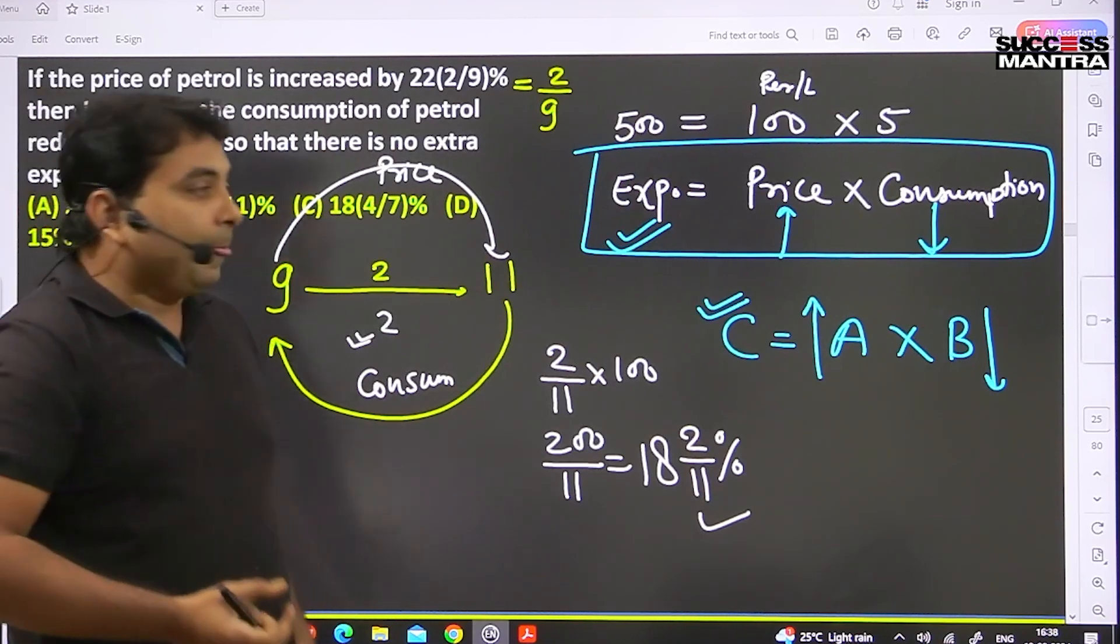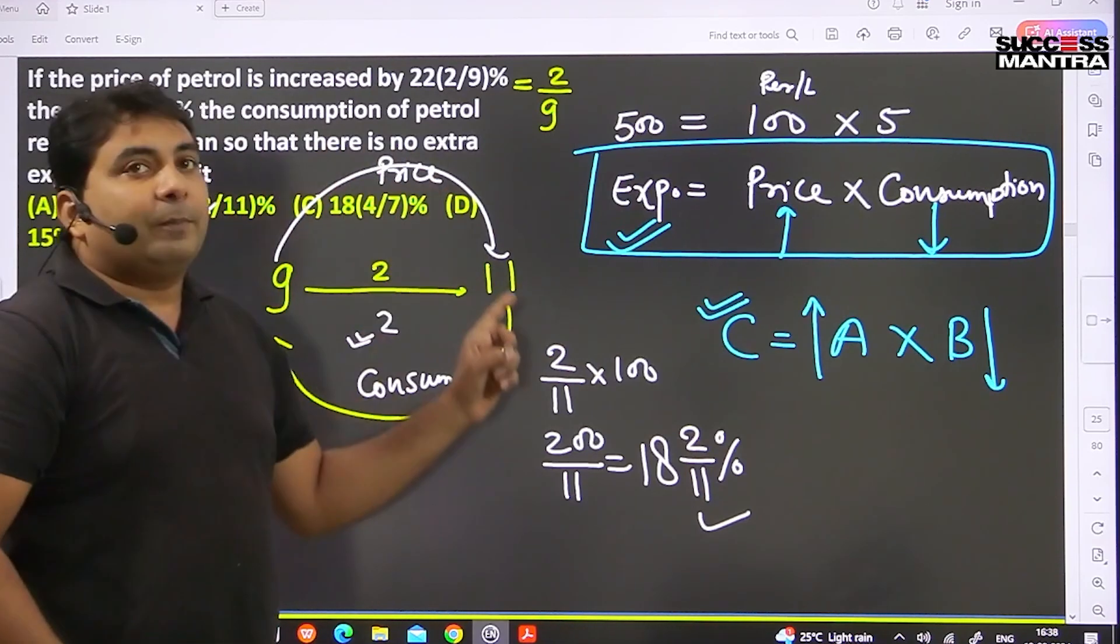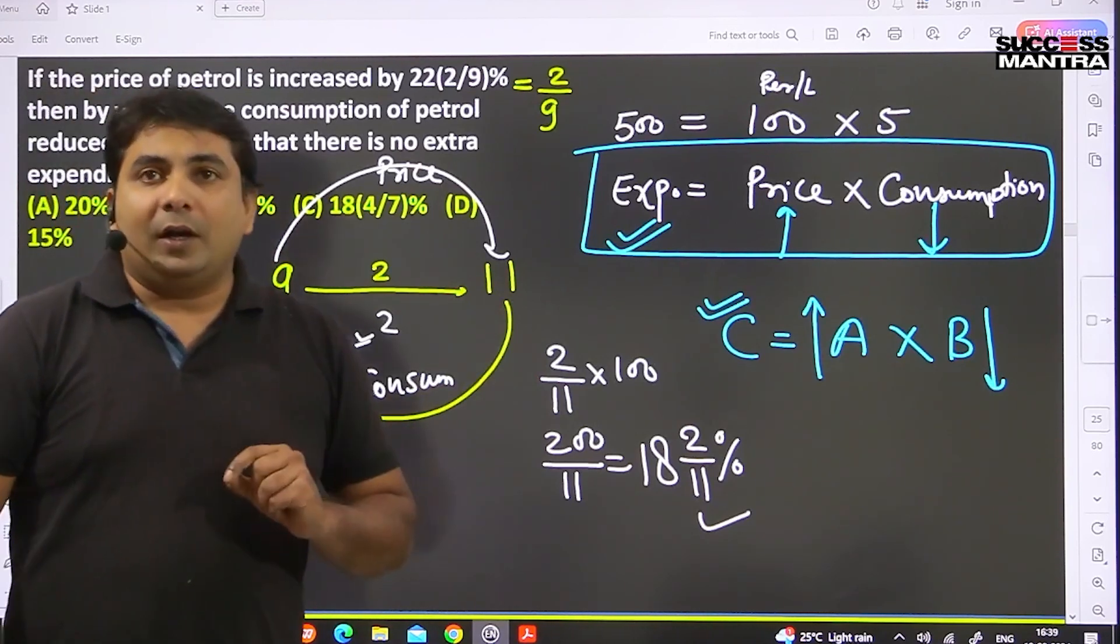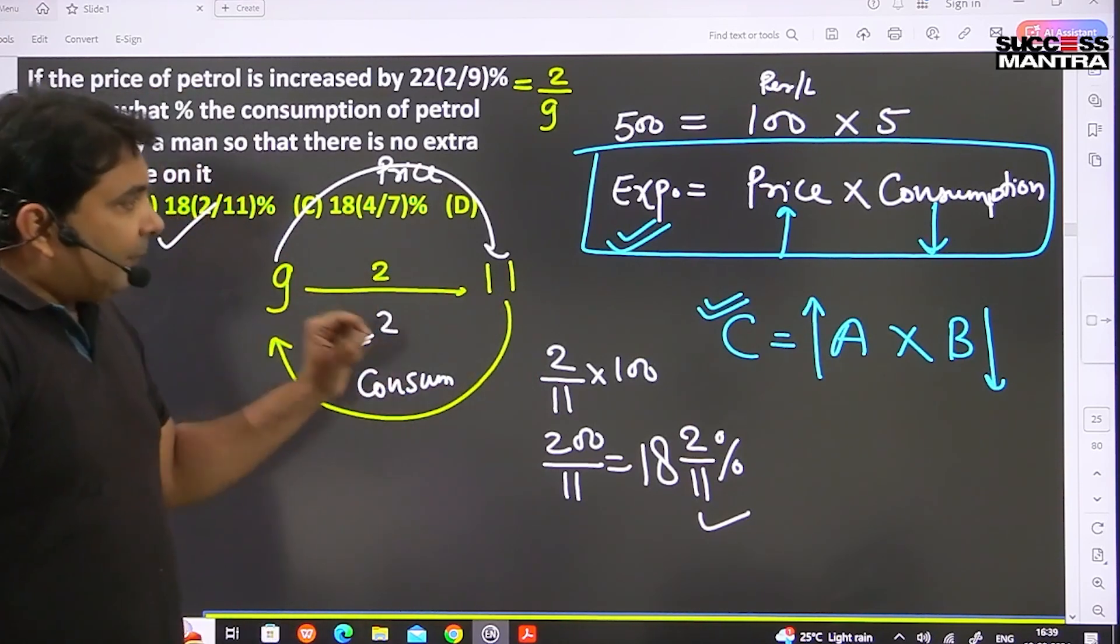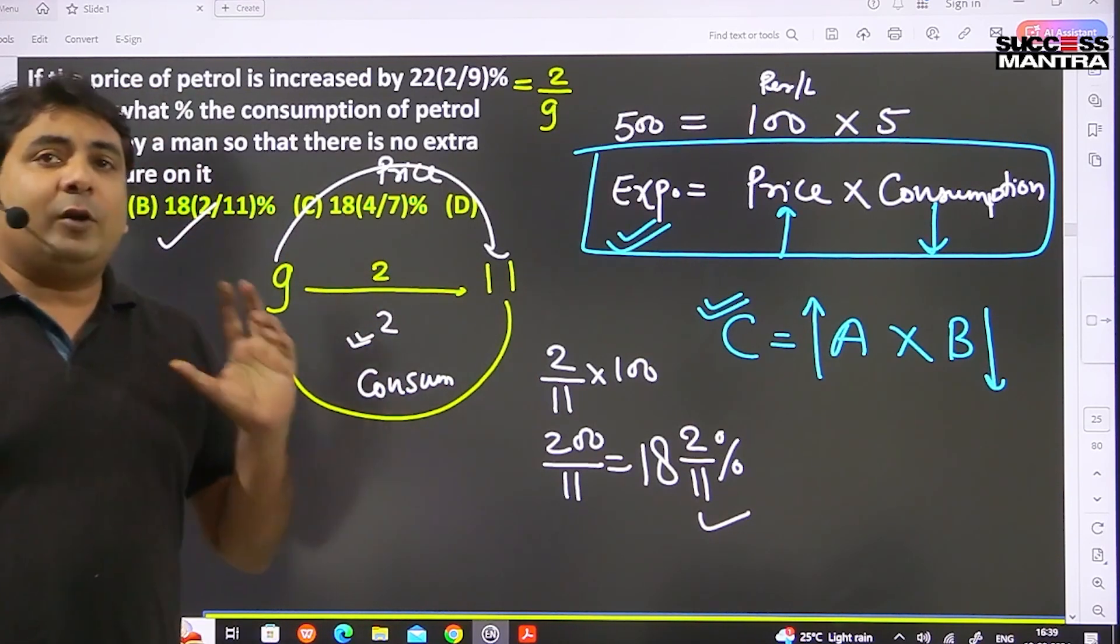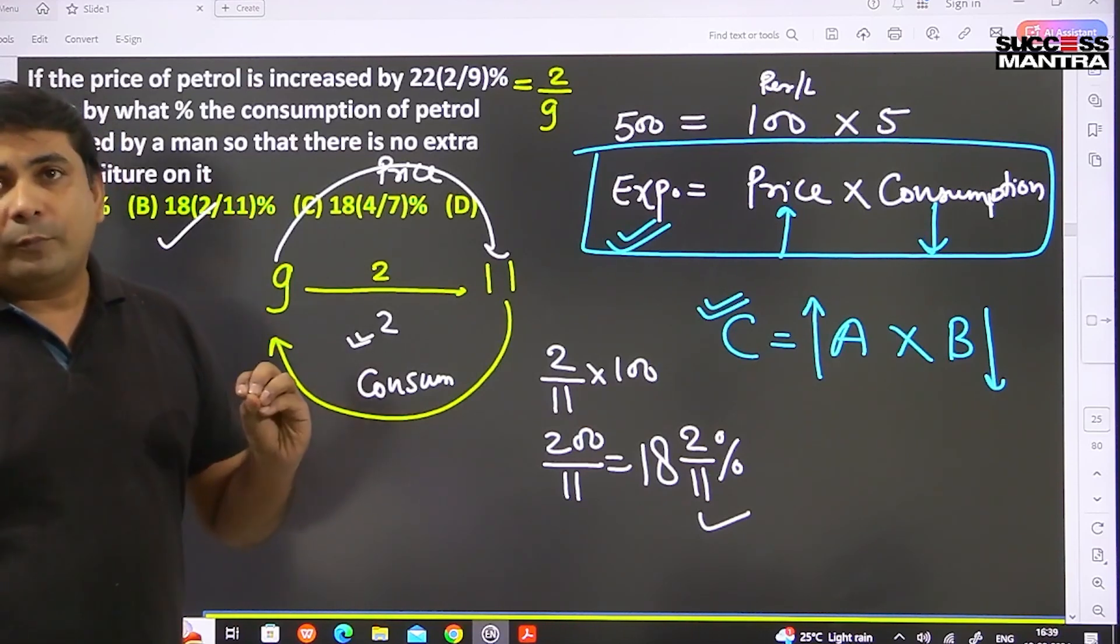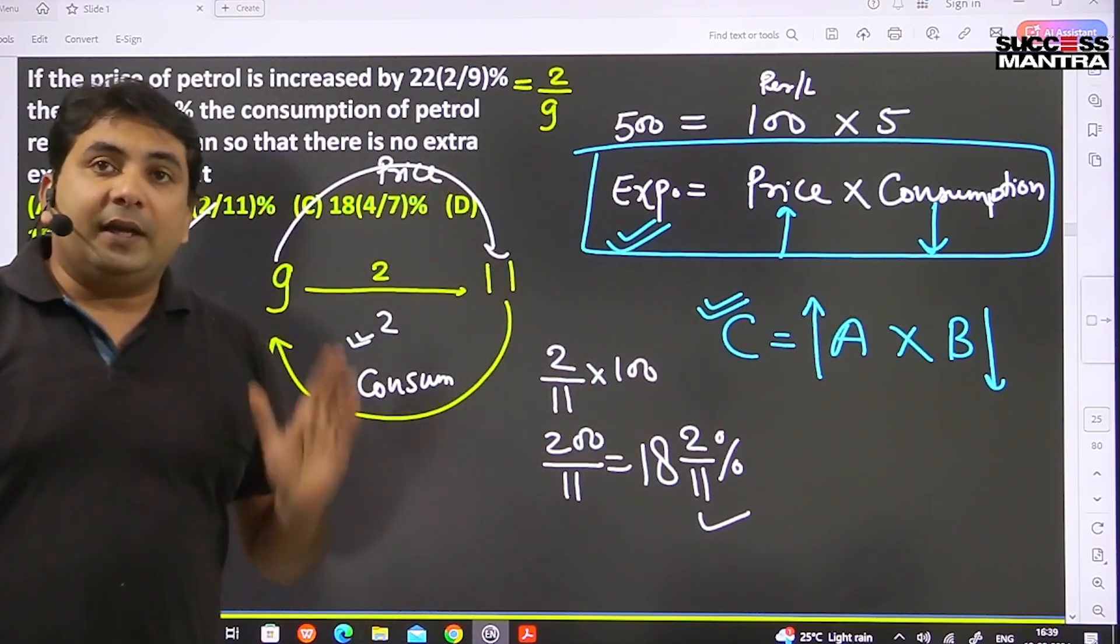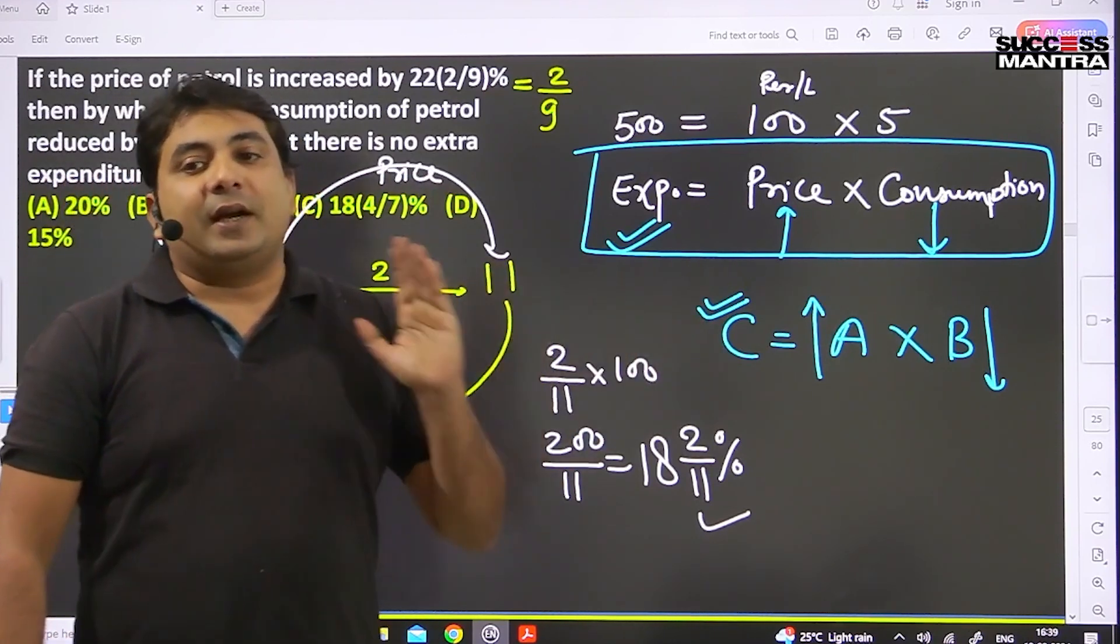Now 9 to 11 price increase, then what is the consumption decrease? So the concept is price or consumption - in any question where there's a formula C = A × B - if one thing increases, then the second thing decreases.